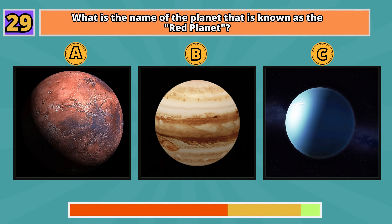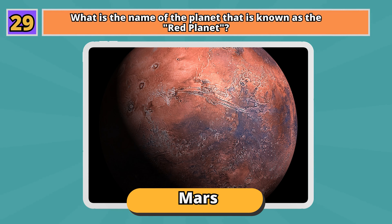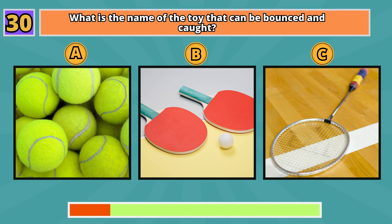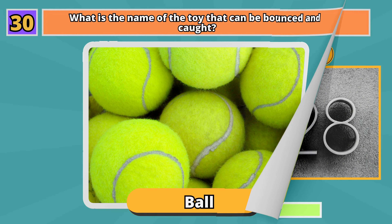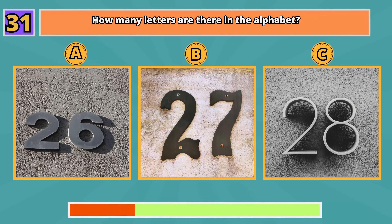What is the name of the planet that is known as the red planet? Mars. What is the name of the toy that can be bounced and caught? Ball.